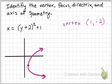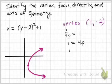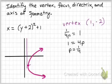Now I need to find my p value. So, 1 over 4p equals my a value, which is 1. If I multiply both sides by 4p, I get 1 equals 4p, so p must equal 1 fourth. That tells me I should go 1 fourth to the right. I'm going to do a smaller one, which is somewhere right around here. And then 1 fourth to the left for my directrix.